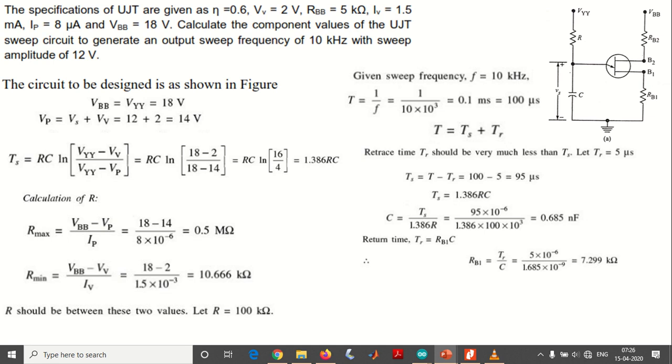Coming to return time, TR equals RB1 into C. We need to find the values of RB1 as well as RB2 resistors. We already know that the resistance RB1 is much smaller compared to RB2. From TR equals RB1 into C, RB1 equals TR by C, which gives us 7.299 kilo ohms.